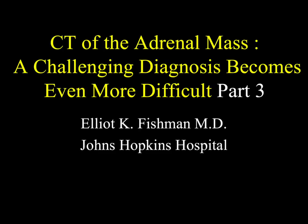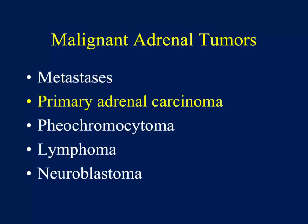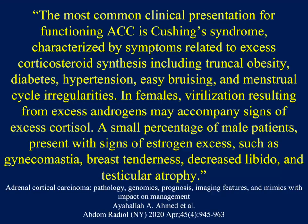Hi, this is Elliott Fishman and welcome to part three of our evaluation of the challenging adrenal mass. We spoke in the first two parts of some of the challenges in benign lesions, the overlap with benign and malignant lesions, the importance of hemorrhage, and we're going to look now at malignant tumors. Obviously, the most common malignancy is going to be metastasis, but let's focus initially on some of the primary lesions of the adrenal gland.